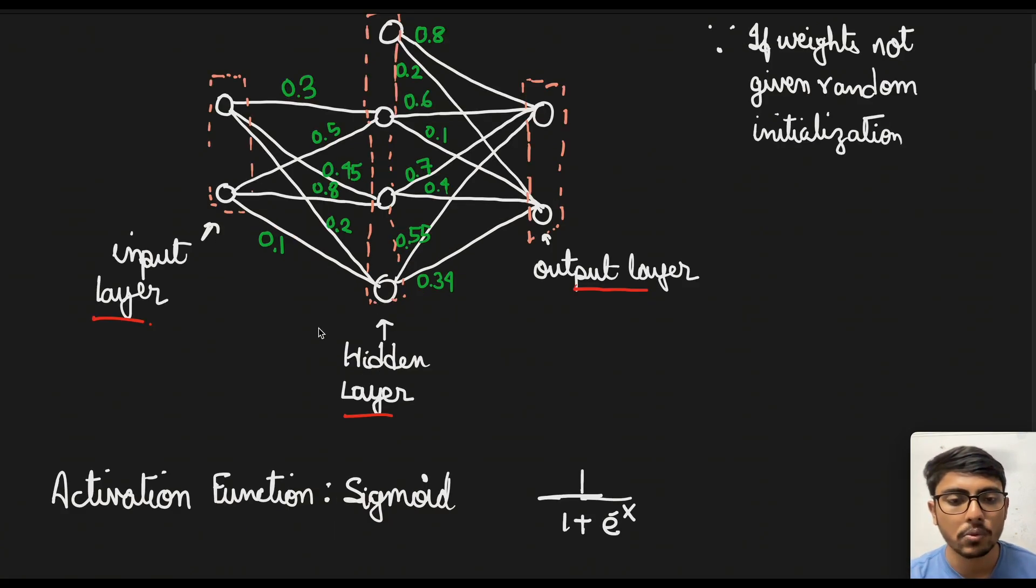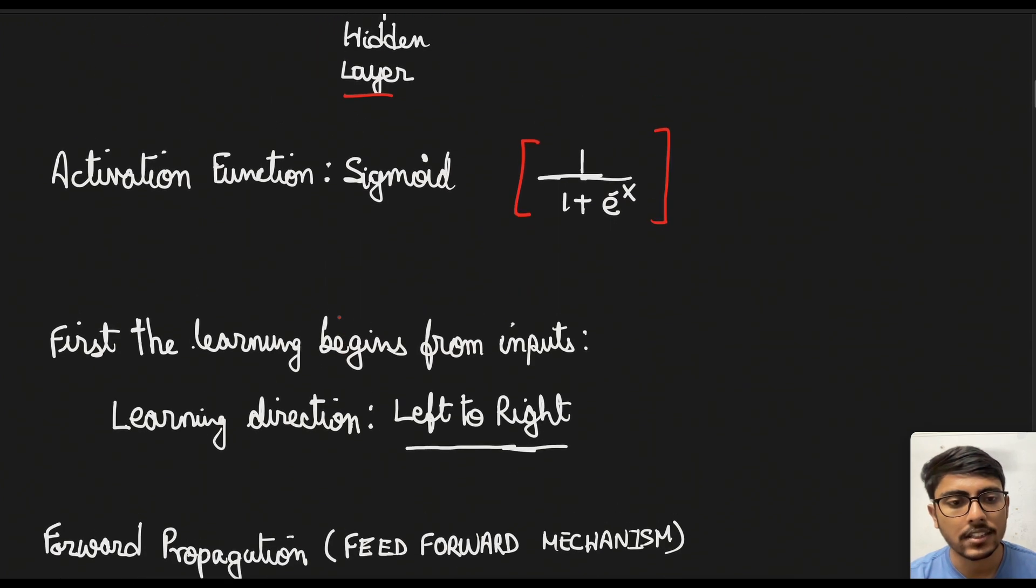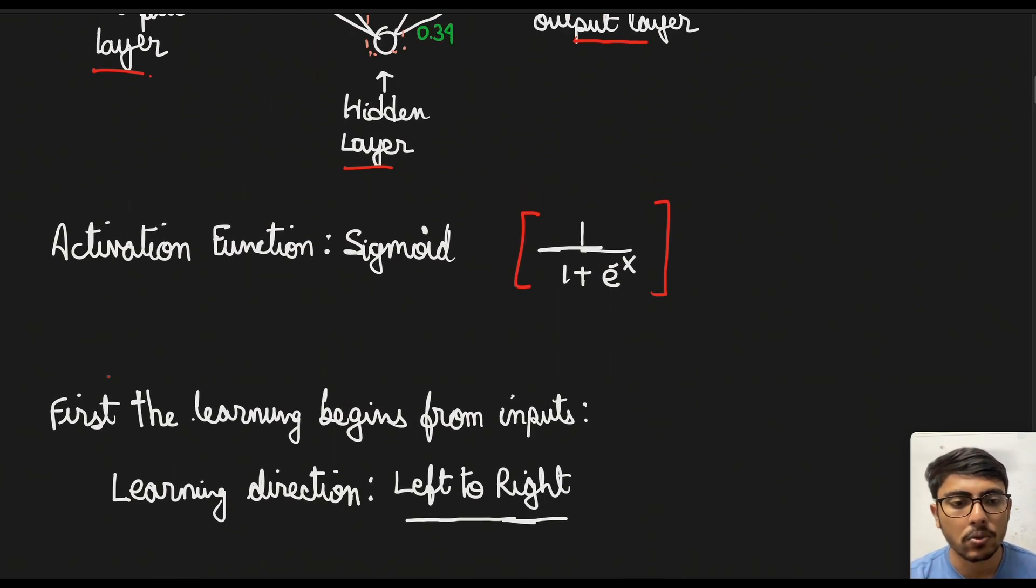The activation function that we are going to use is sigmoid denoted by 1 / (1 + e^(-x)). We will see how we are going to use this. Next, the learning begins from the inputs. So the learning will begin from the left side and proceed towards the right. That is the learning direction is from left to right.